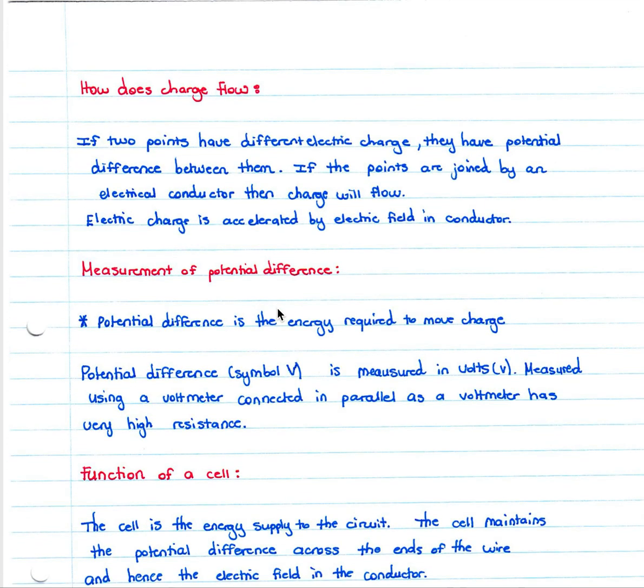How does charge flow? If two points have different electric charge, they have potential difference between them. If the points are joined by an electric conductor such as a wire, then charge will flow. Electric charge is accelerated by the electric field in the conductor.